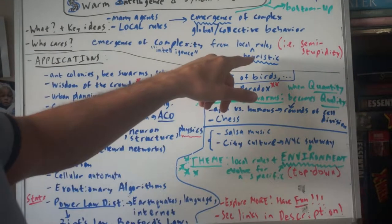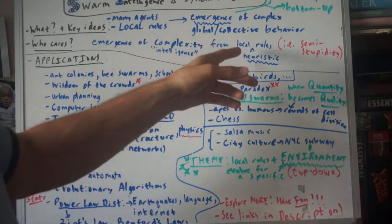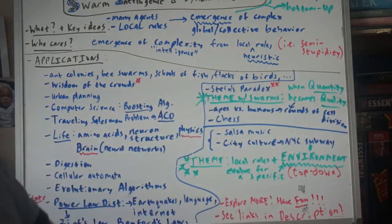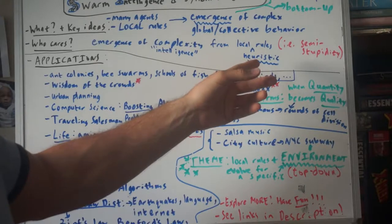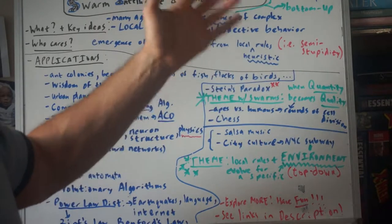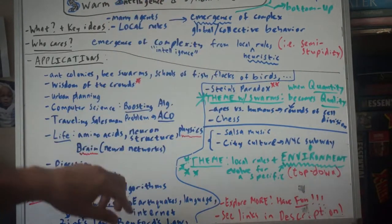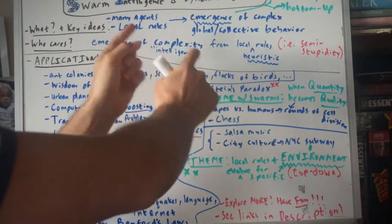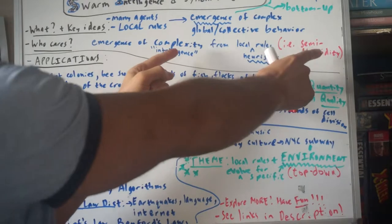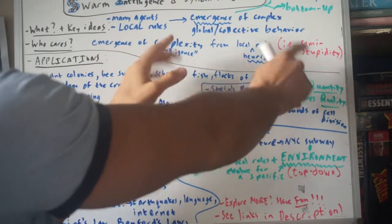So heuristic just means rule of thumb. So a rule of thumb, like I said earlier, might be stay about three feet away from your neighbor. Is that the optimal thing? It may not be the optimal, but it might be a reasonable thing if you're a bird, let's say. Okay, so the point is we can get some really cool behavior out of pretty stupid behaviors, almost stupid behavior.